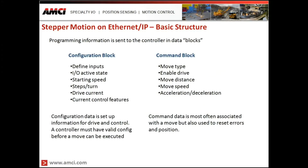The basic data structure sent back and forth over the Ethernet IP network is organized into data blocks. The first is a configuration data block, containing anywhere from eight to ten words. Those words include definition of the inputs, since each product has configurable inputs for various purposes — each needs to be defined as a homing input, clockwise input, or whatever is available. We also define the input active state, whether active high or active low.